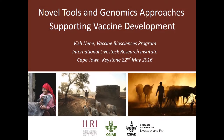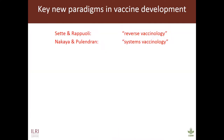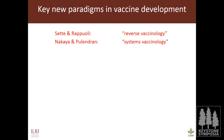I don't know if you guys did your homework, so this is the first question. When setting up this session, the Keystone asked me to supply two papers to be sent to you as reading material. I sent you a paper by Sette and Rappuoli and another by Nakaya and Pulendran. The first covers reverse vaccinology and the second systems vaccinology, and those will be the primary focus of discussion.